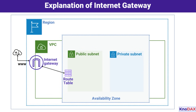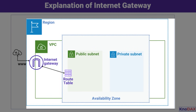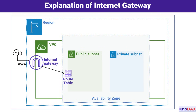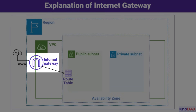Let's use this visual representation to simplify the understanding further. The larger dotted boundary represents an AWS region. Inside the region, we have a VPC, or Virtual Private Cloud, which is your isolated cloud network. Think of a VPC as your private slice of the AWS cloud. For your resources inside the VPC to communicate with the Internet, you need an Internet Gateway, shown here in purple. The Internet Gateway acts as a bridge, allowing two-way traffic between the Internet and your VPC. It scales horizontally, ensuring it remains highly available and reliable.